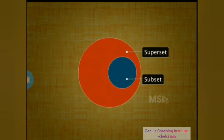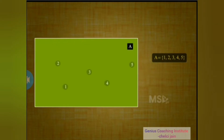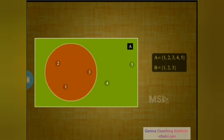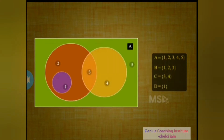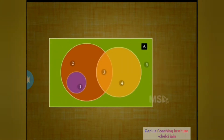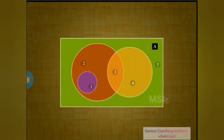To understand the concept of subsets of a set, let's take a simple set, say A, consisting of the first five natural numbers. Let's form sets B, C and D that are a part of set A. These smaller sets, i.e., B, C and D, are called subsets of set A.